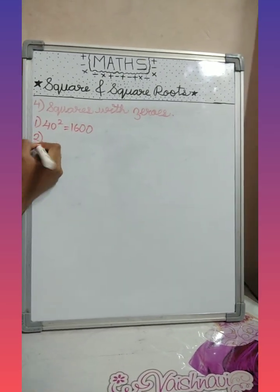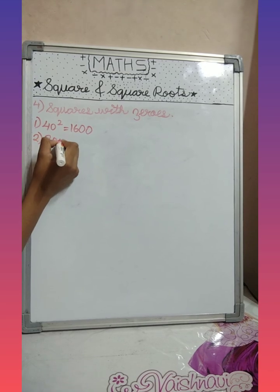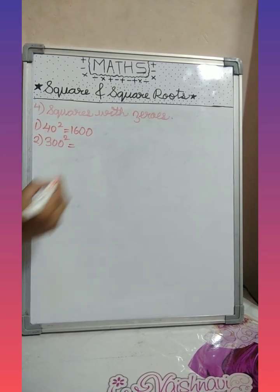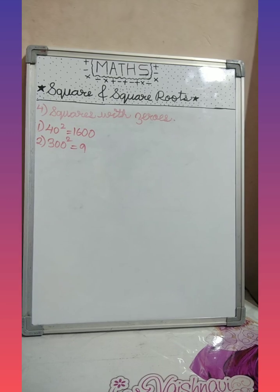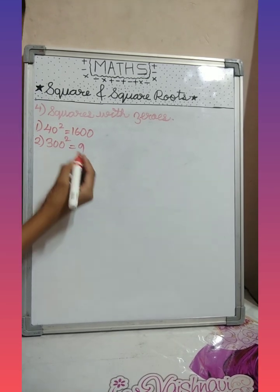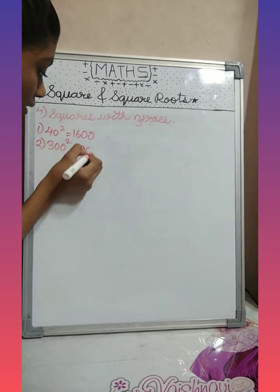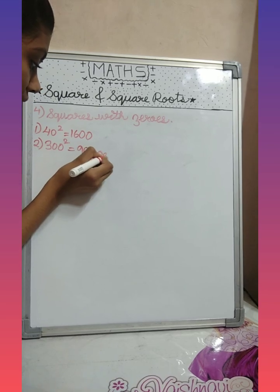Let's see next example: three hundred square. Three square is nine. Then we will double the zeros: one, two, three, and four.